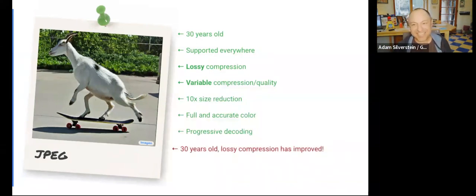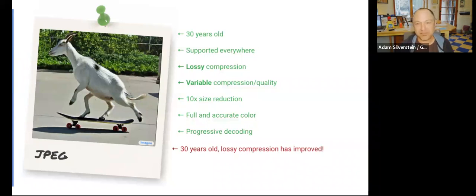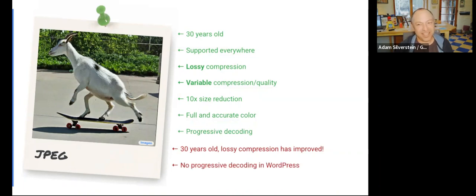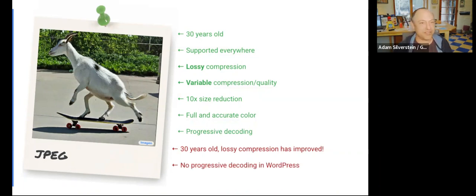Some downsides of JPEG: it's 30 years old and the compression isn't really that great — modern formats do a much better job. There's also really no progressive decoding in WordPress. When you upload images and WordPress creates the subsizes served on the front end, those are not progressively decoded images because of the underlying server architecture of how WordPress runs. Generally speaking, you can't really take advantage of that feature in WordPress.